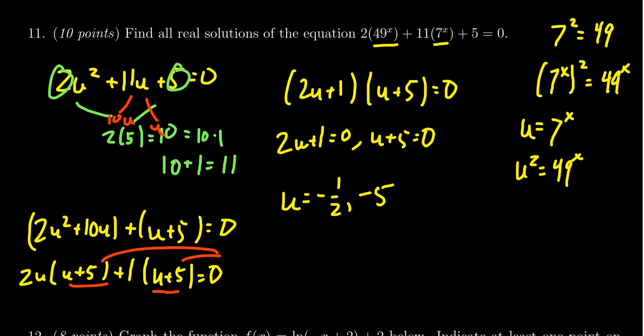Now, that solves the quadratic equation in terms of the symbol u. We have to solve it in terms of x, right? So substitute back in the 7^x there. So we have 7^x = -1/2 and we have 7^x = -5.